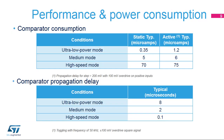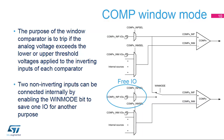The on-chip comparator configuration capability allows the user to select the best performance point for the targeted application. It replaces the external standalone comparator, thereby reducing the bill of materials. The purpose of the window comparator is to trigger an interrupt if the analog voltage goes beyond the defined lower and upper voltage thresholds applied to the inverting inputs of each comparator. This event can generate an interrupt through the EXTI line. Two non-inverting inputs can be connected internally by enabling the win-mode bit, and therefore save one I/O for another purpose.